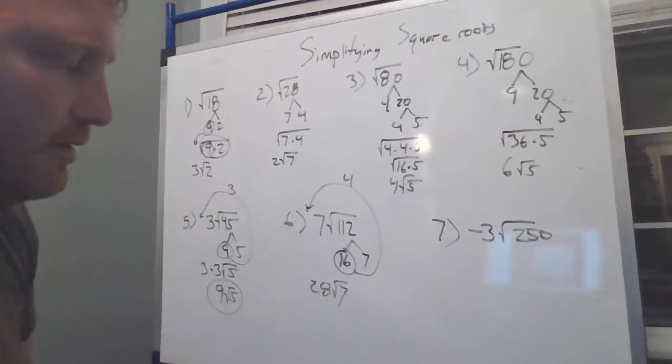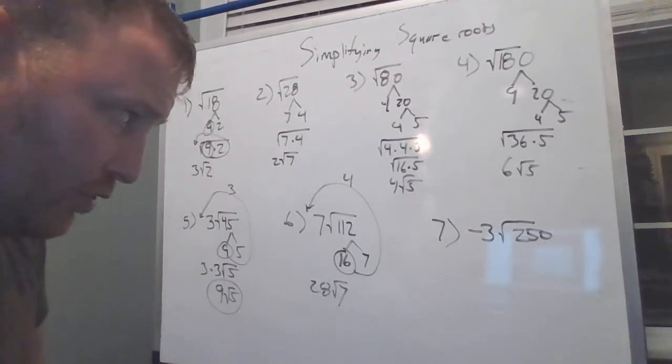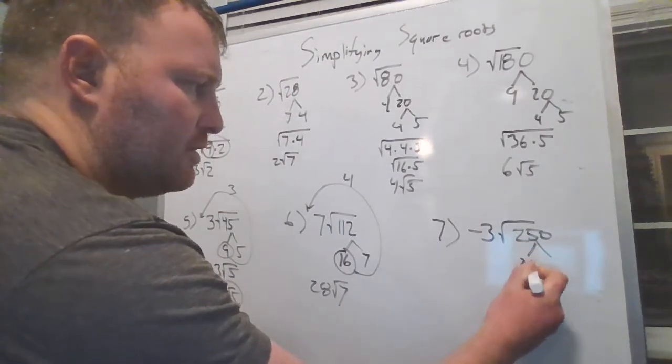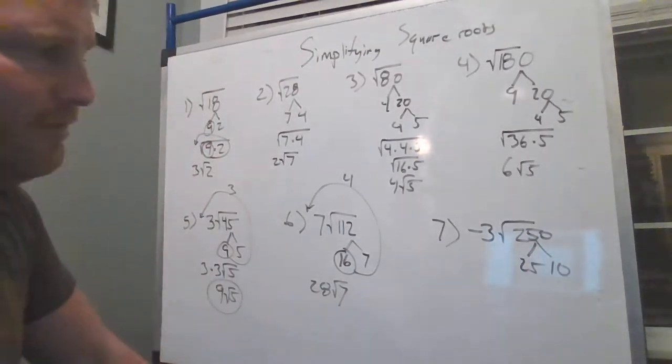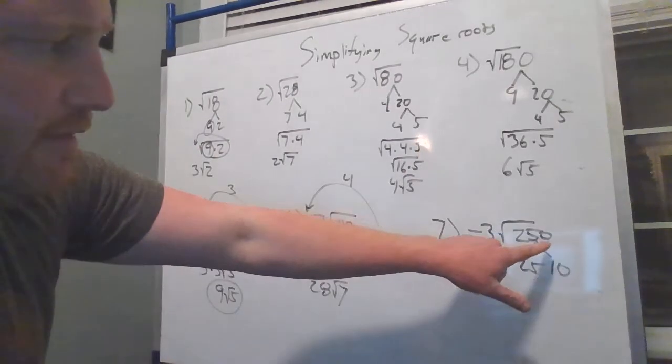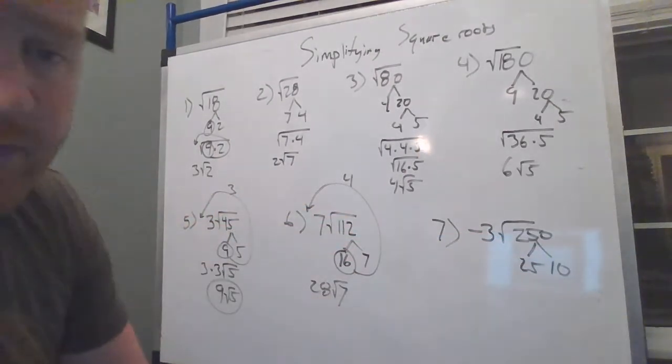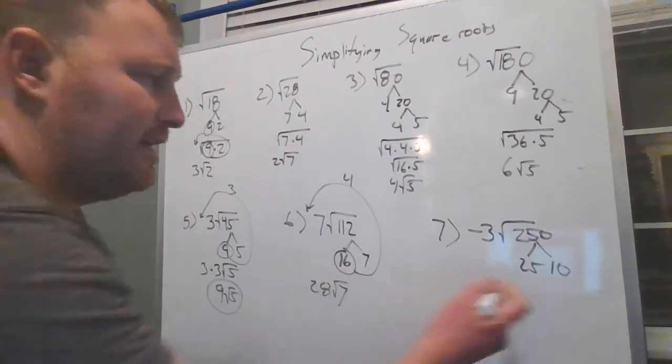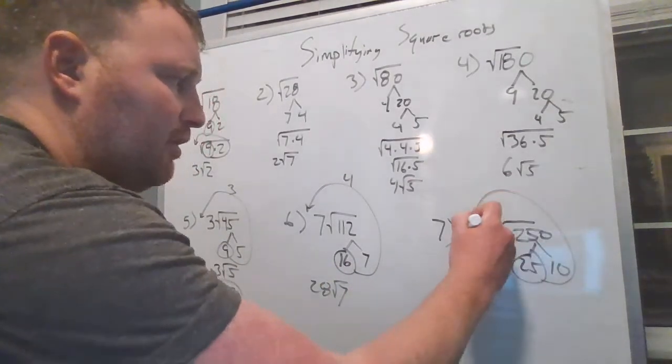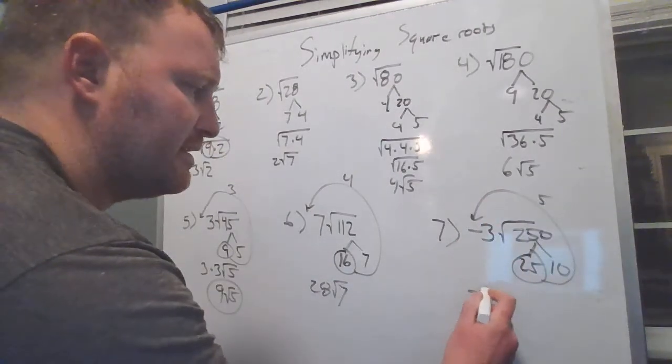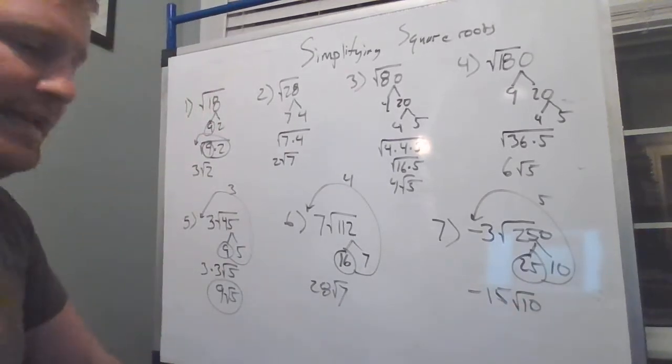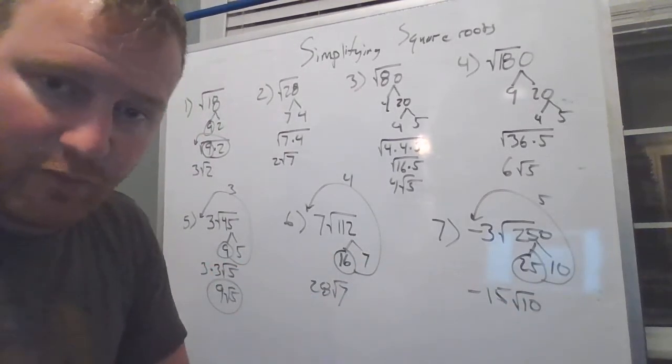And then this one right here says 250. Well, I know there's a 25 inside there that works, also a 10. 25 and 10. I know 25 works, because it ends in a 50 or a 75, so I know that 25 is divisible by this. 25 comes outside as a 5, and then multiply that 5 by this number in front, so now this says negative 15, radical 10.